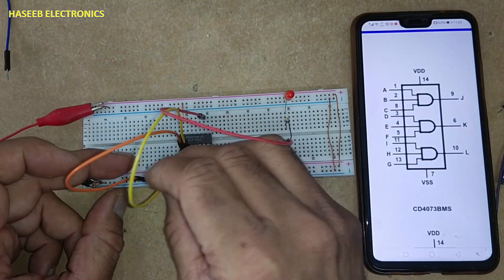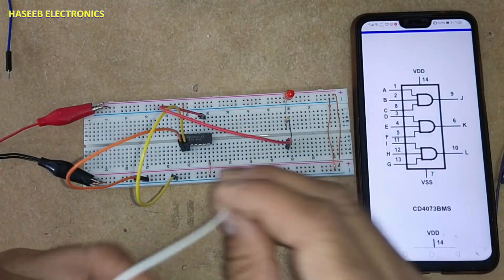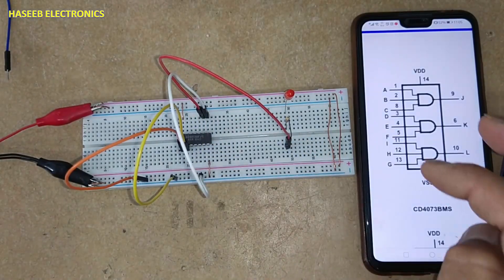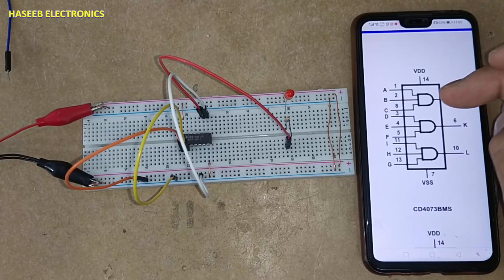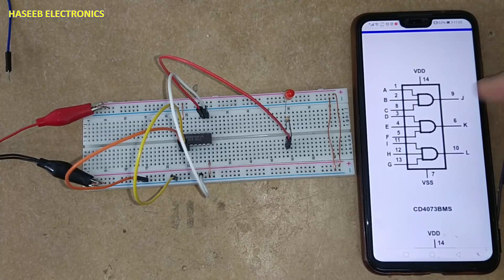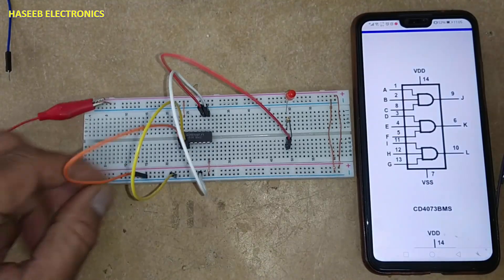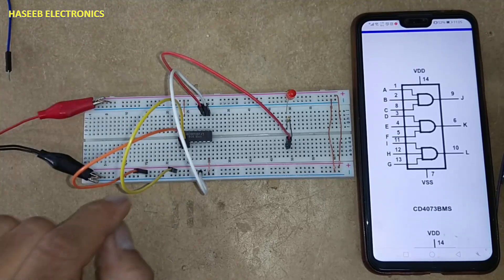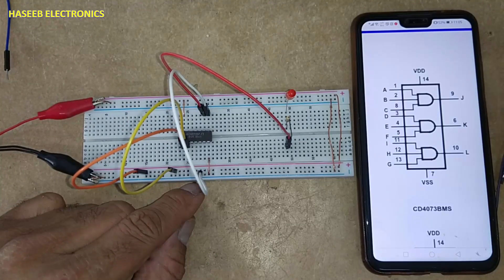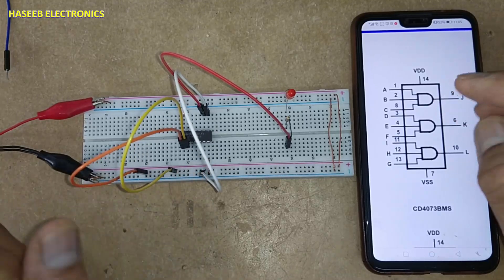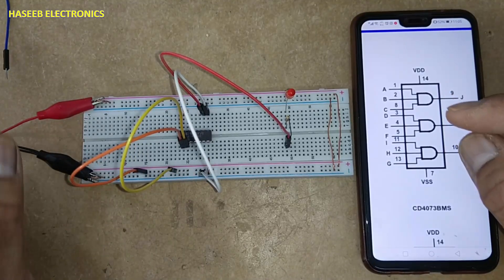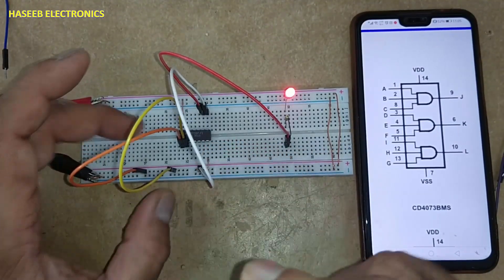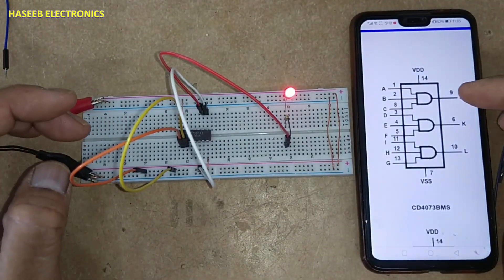In an AND gate, when all inputs are low, the output is low. When any input is low, the output is low. When all inputs are high, the output is high. This is the AND function.